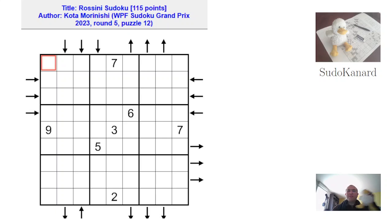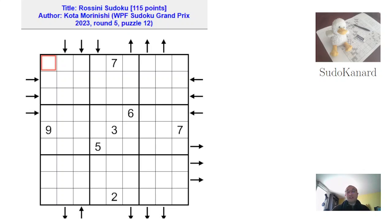Hello and welcome to Sudokanar. We're here to solve this Rossini Sudoku by Japanese Grandmaster Kota-sama from the latest WPF Sudoku Grand Prix. This is a harsh moment for me because I'm dreading having to tackle this very hard puzzle — 115 points. Some solvers told me it was overvalued, but I did not dare attempt it during the contest, and when I solved it afterwards it was really, really a painful moment because I'm bad at Rossini.